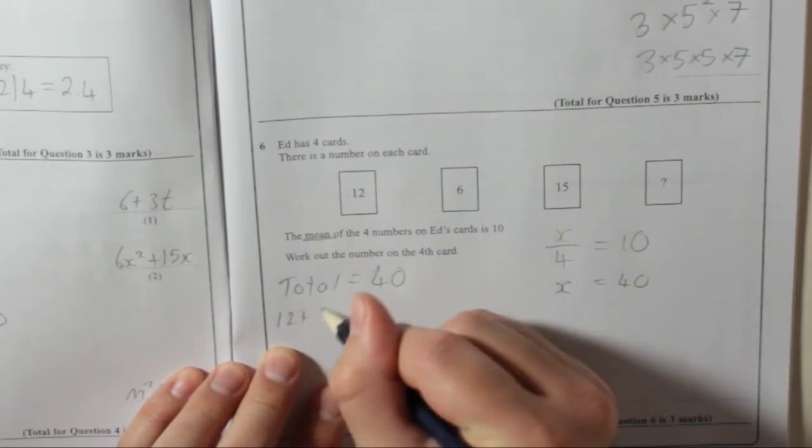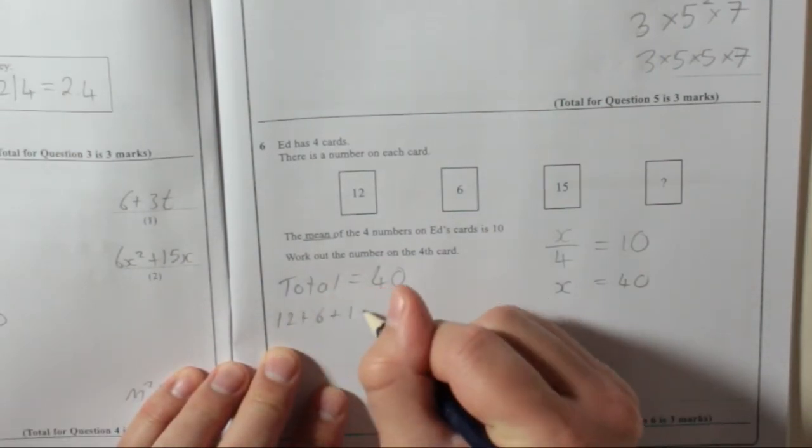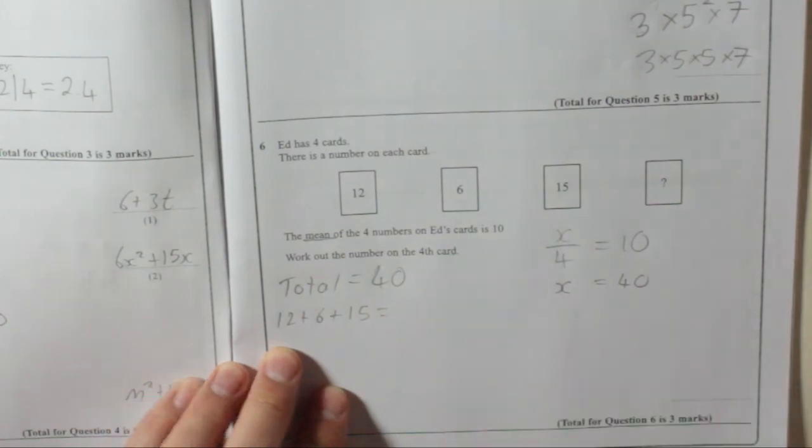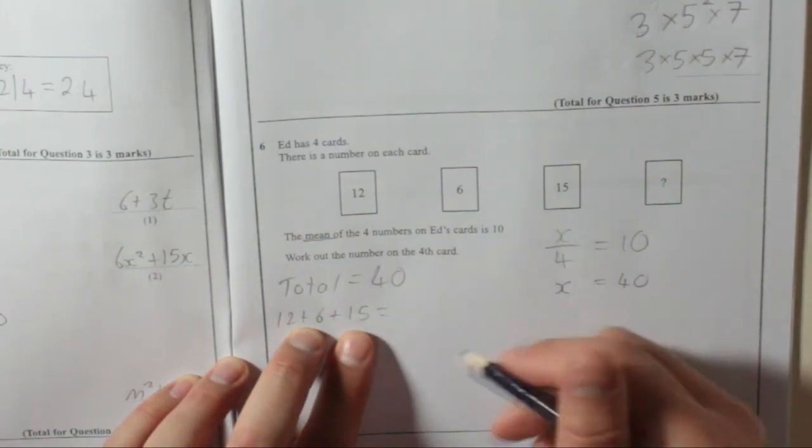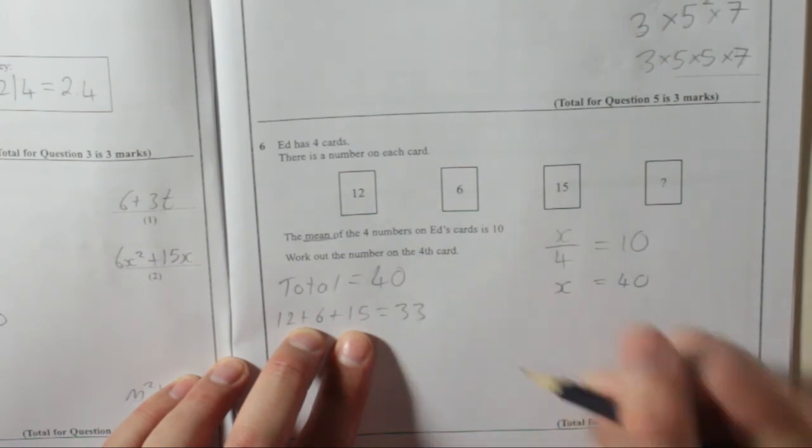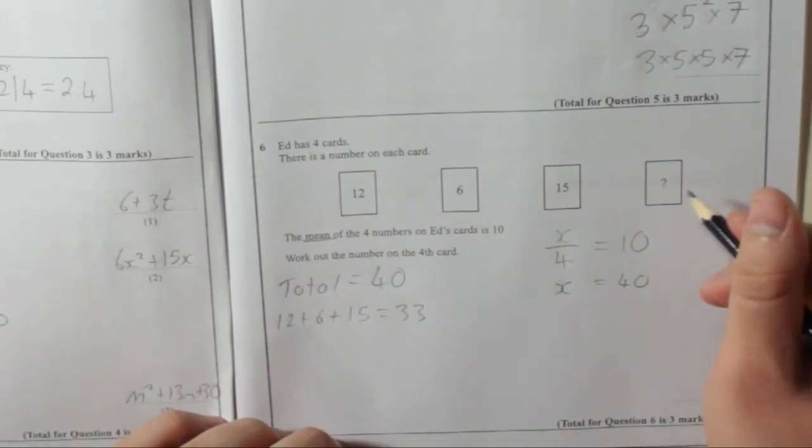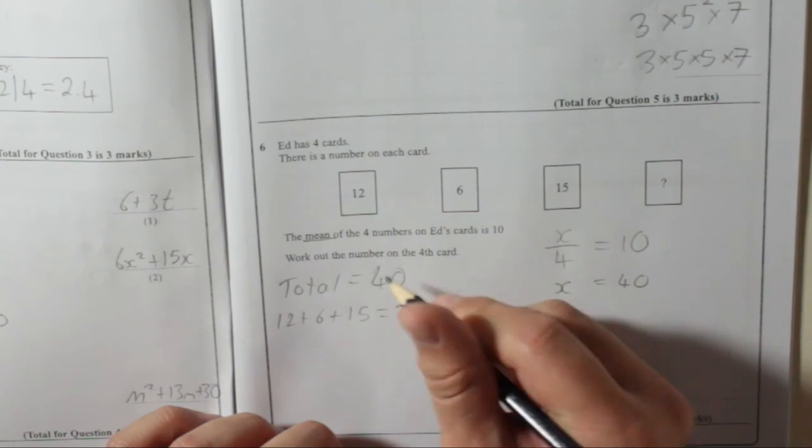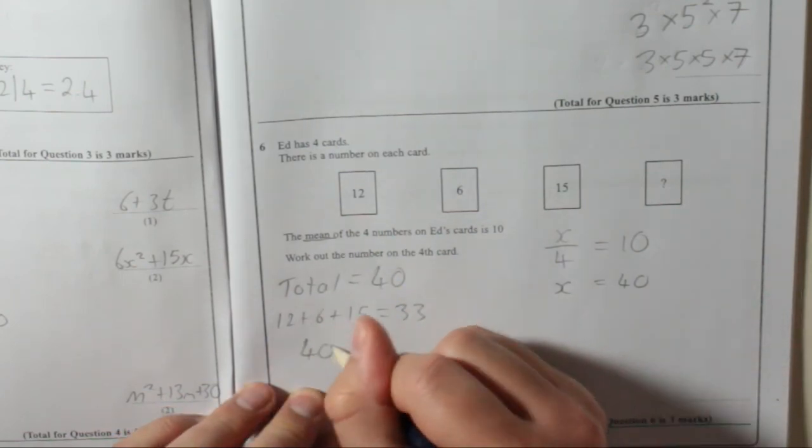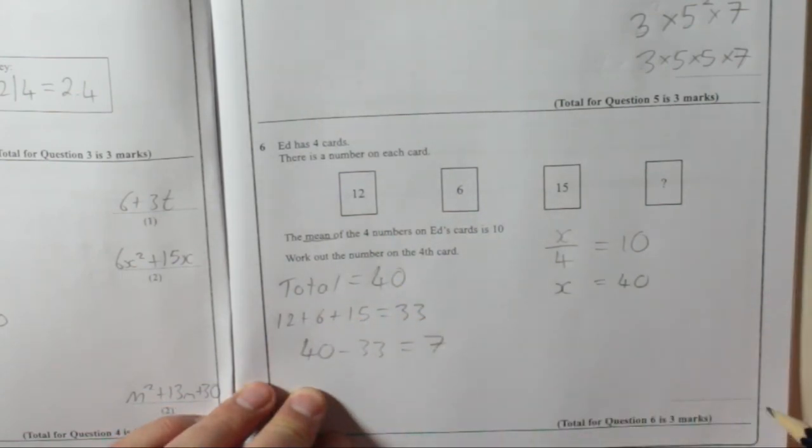Now, twelve plus six plus fifteen - twelve plus six is eighteen, plus fifteen is thirty-three. So what's left over? It's the difference between forty and thirty-three. Forty take away thirty-three is seven. So that's the number on the fourth card: seven.